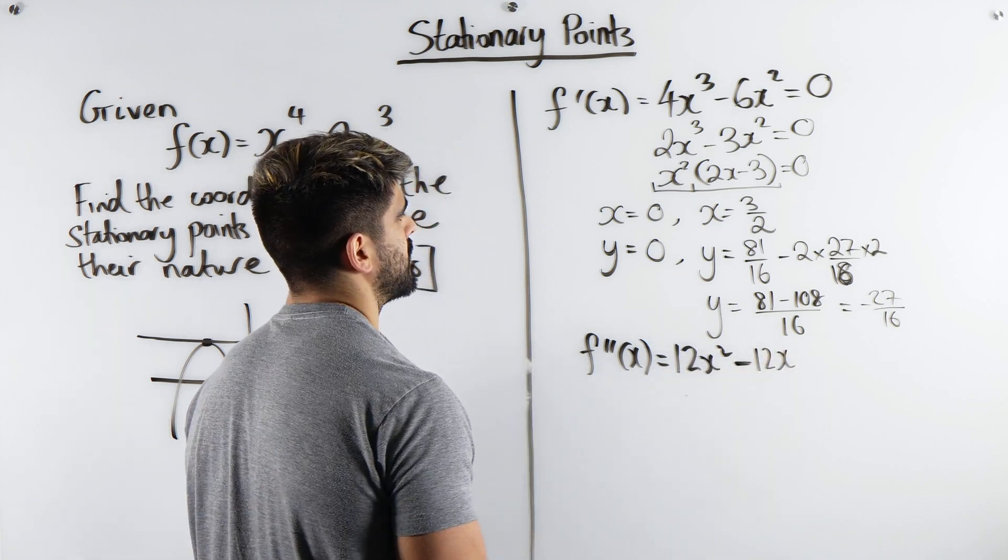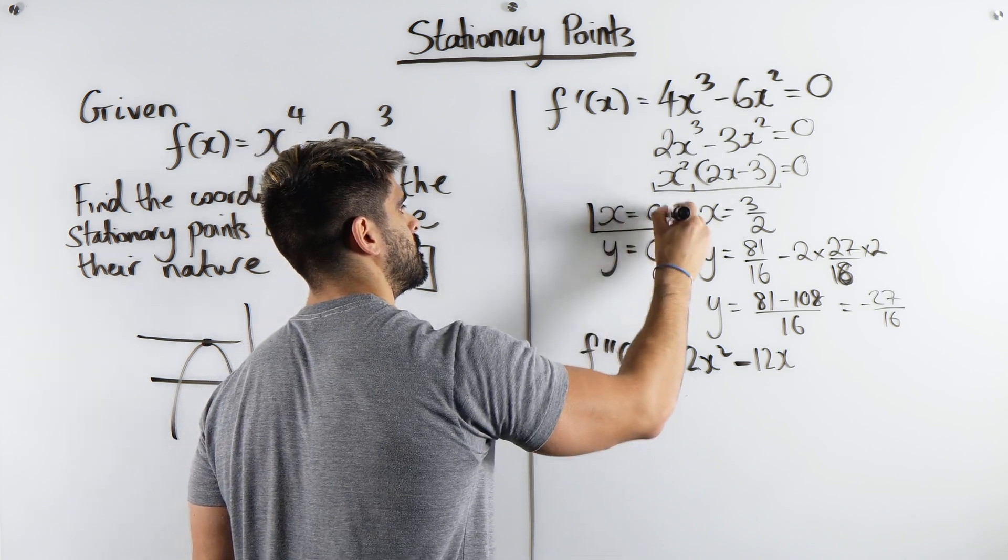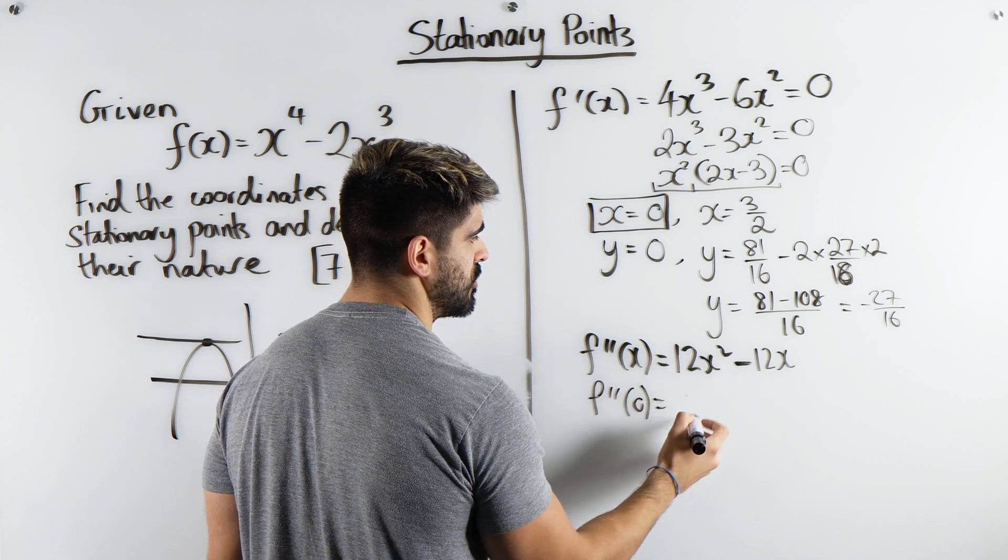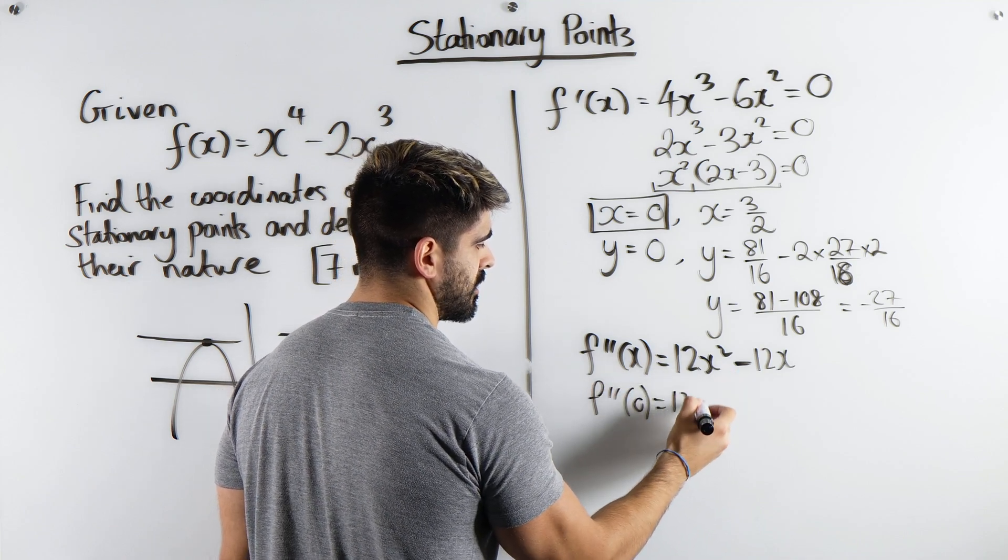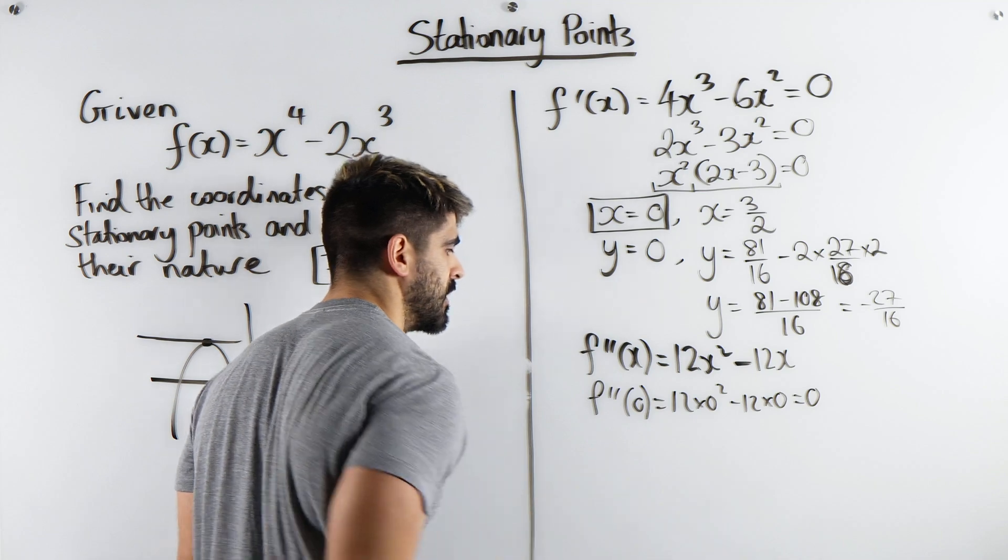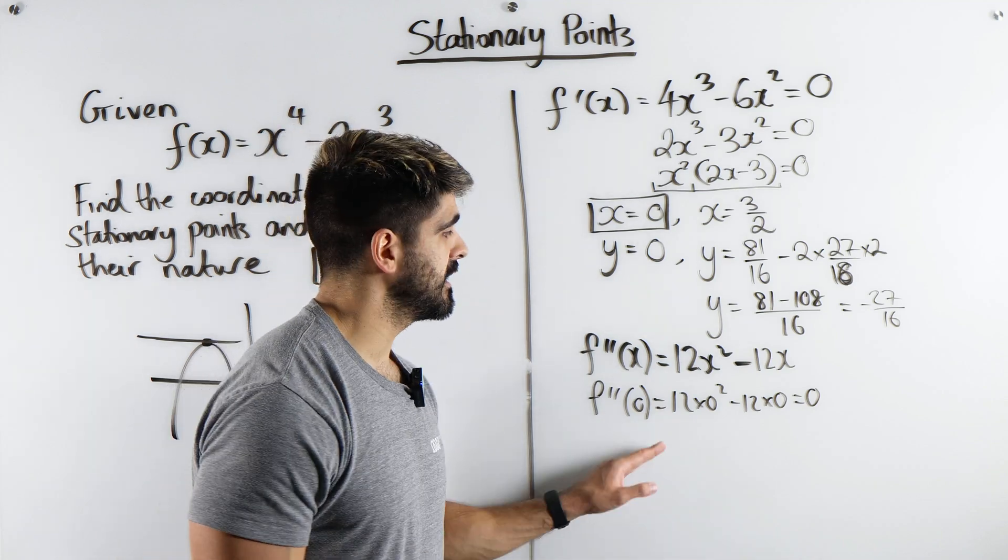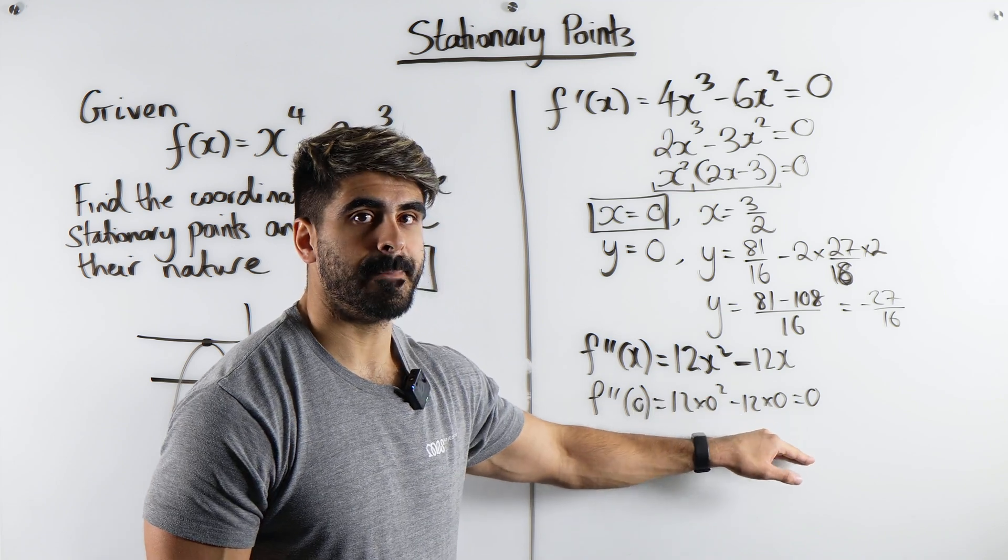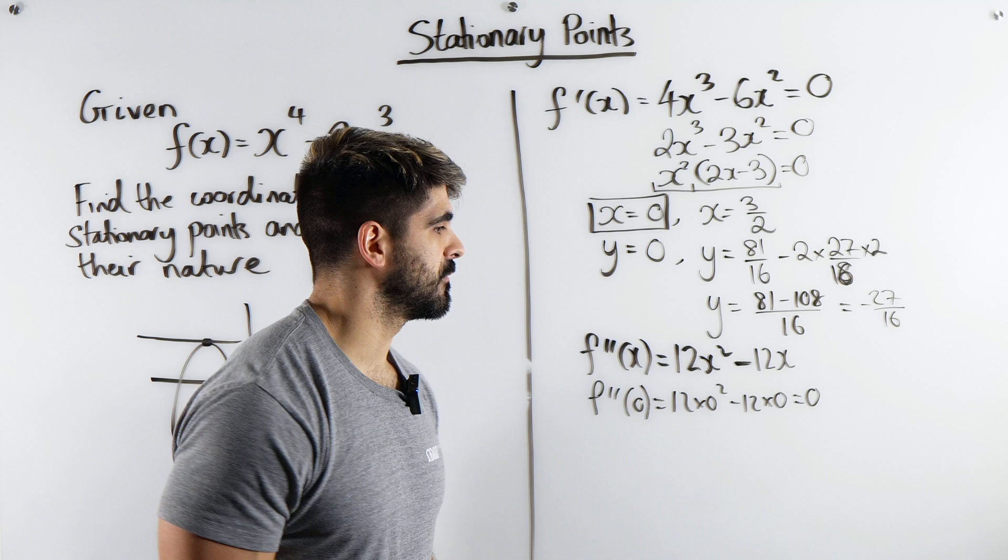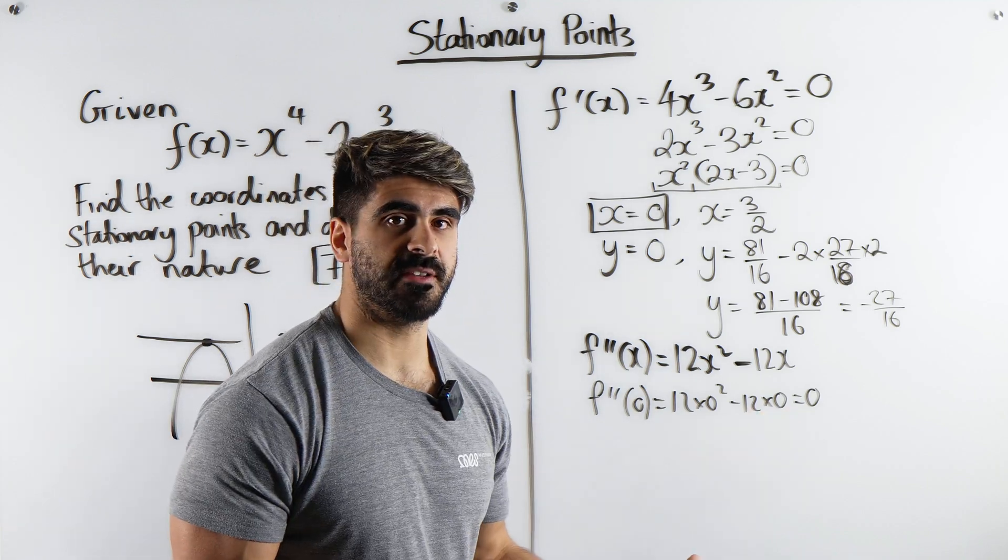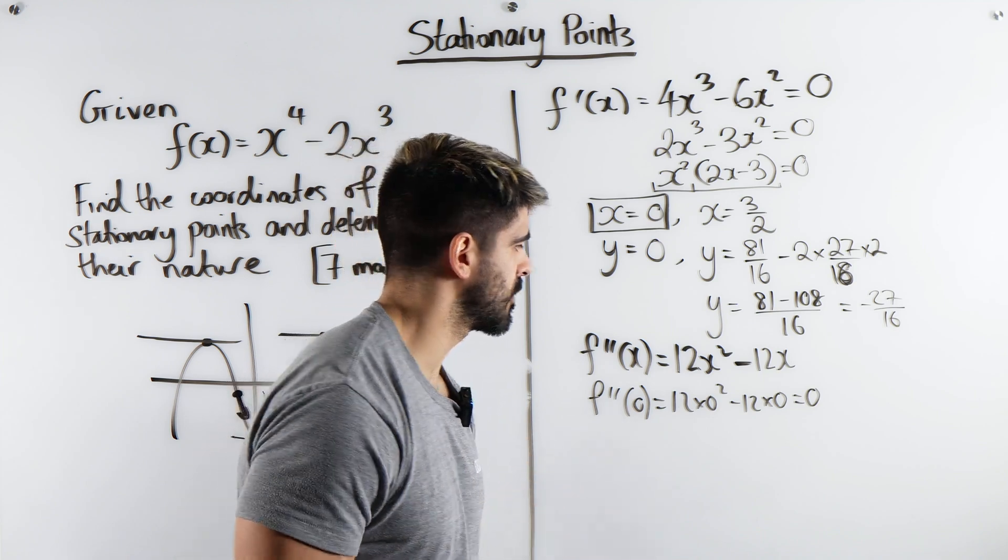Now we're going to sub in x is 0. And this is very interesting because when you sub in 0, you're going to get 12 times 0 squared minus 12 times 0, which is 0. Now what does that mean? It means we don't actually know if this is a minimum, maximum or an inflection point. Now there's a difference and you can't just say because it's 0, it's going to be an inflection point. You'd get it wrong.